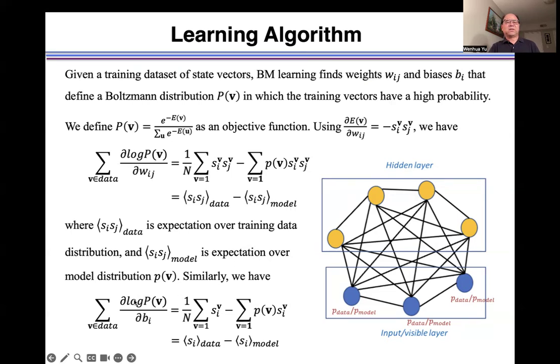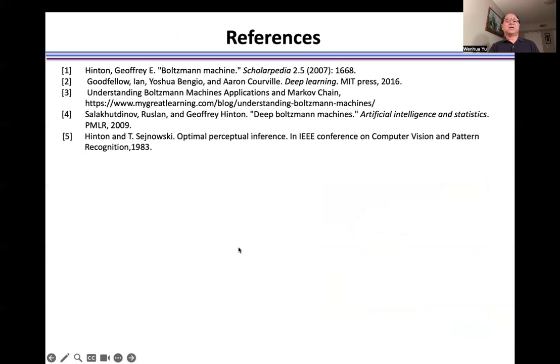Similarly, the gradient of p with respect to bias bi is equal to difference between expectation over data distribution and expectation over model distribution. For more details, please check these references. Thank you.